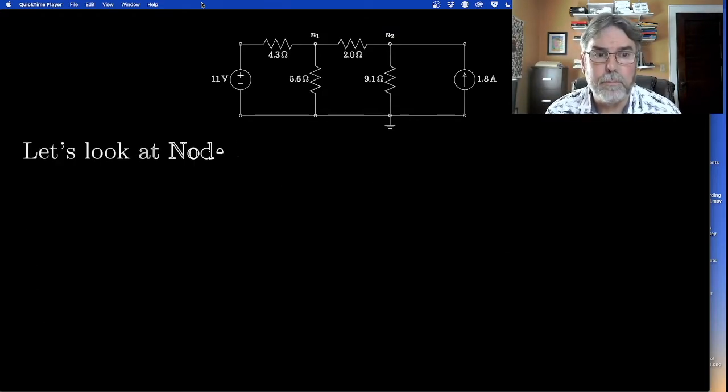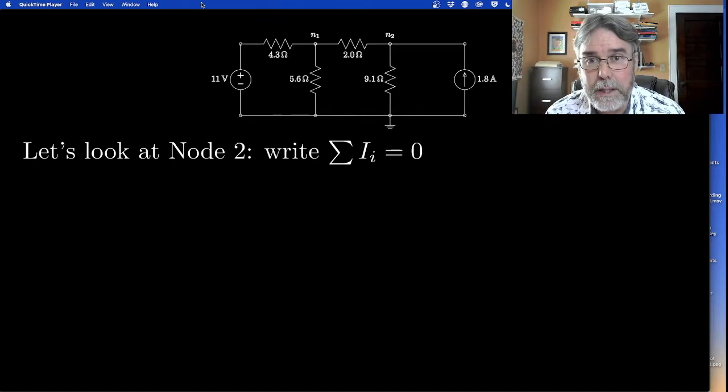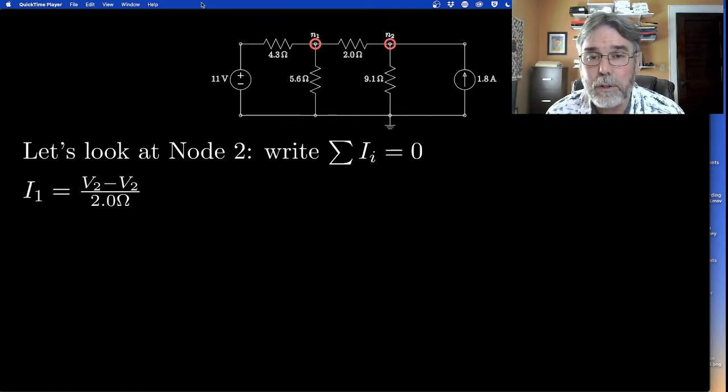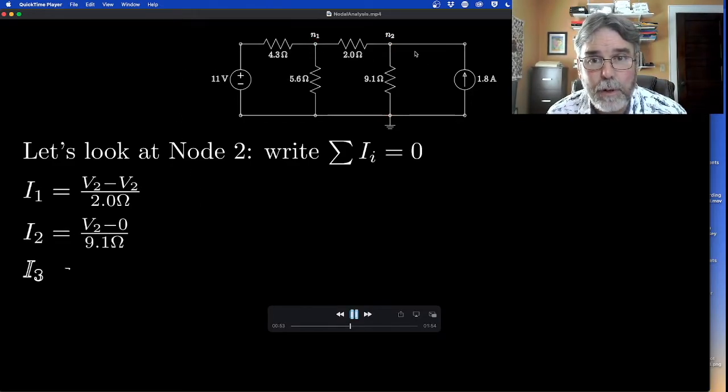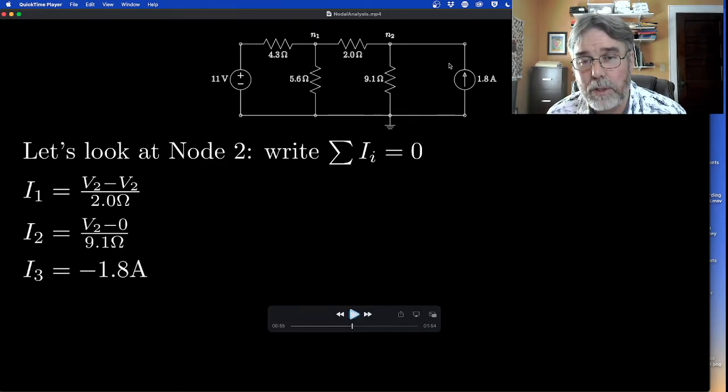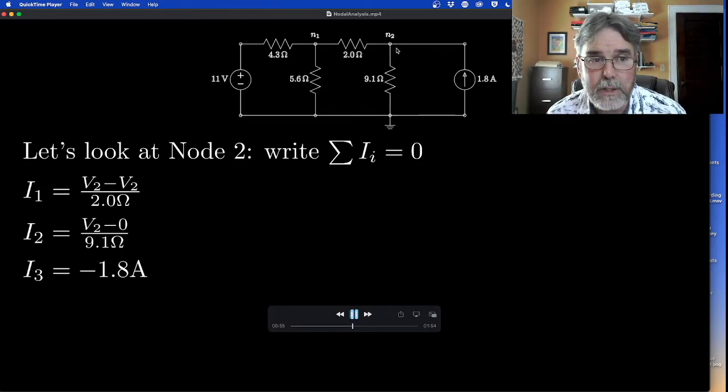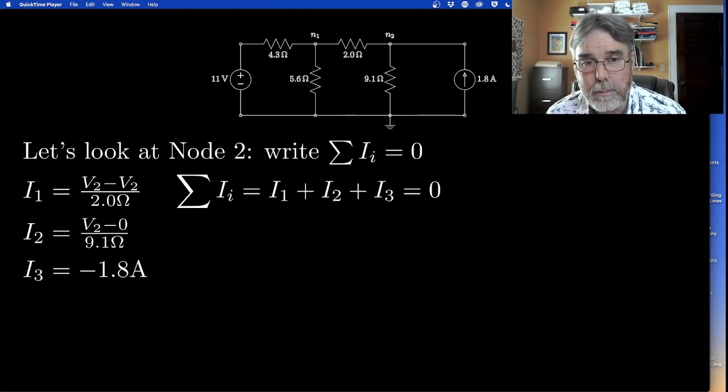Let's look at node two. Node two has three branches. I'm going to write out the sum of the currents leaving node two is equal to zero. The current leaving node two heading for node one is V2 minus V1. Oh, that's an error. It should be V2 minus V1 over 2. This should be a V1 here, but no time to change it now. Here I get V2 minus zero over 9.1. That's this branch. And finally, this third branch has a current source, so I know the current is negative 1.8 amps. So I don't have to write an Ohm's law for that one. Then I just add those three guys together and demand that they be zero.